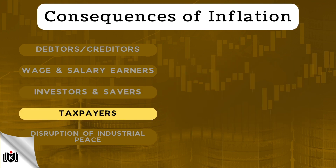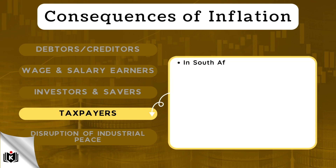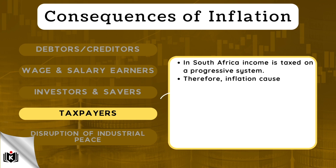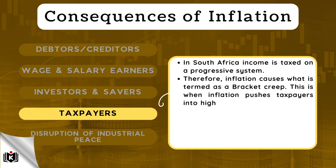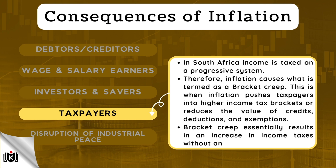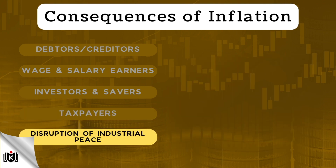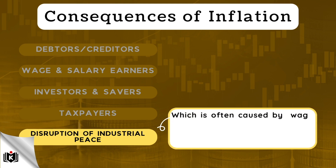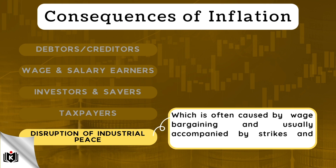Inflation also affects taxpayers. In South Africa, income is taxed on a progressive system. Therefore, inflation causes what is termed a bracket creep — this is when inflation pushes taxpayers into higher income tax brackets, or reduces the value of credits, deductions, and exemptions. Bracket creep essentially results in an increase in income taxes without an increase in real income. Lastly, another consequence of inflation is the disruption of industrial peace, which is often caused by wage bargaining and usually accompanied by strikes and mass action.